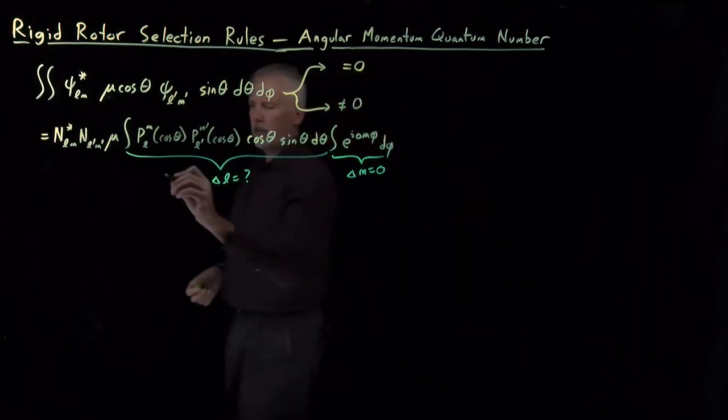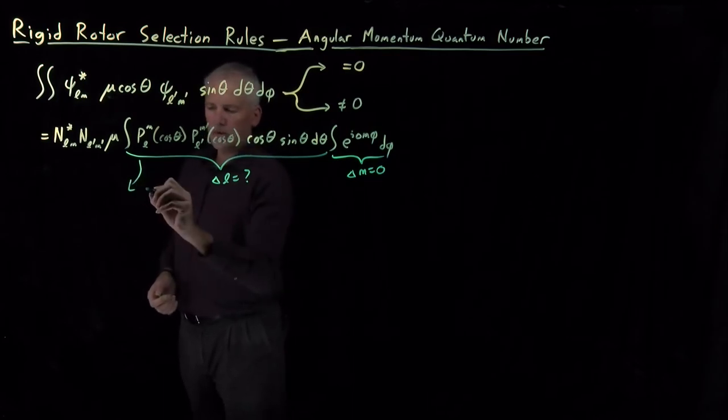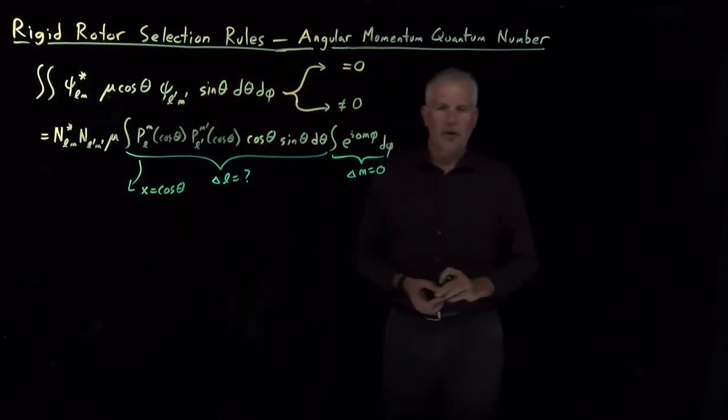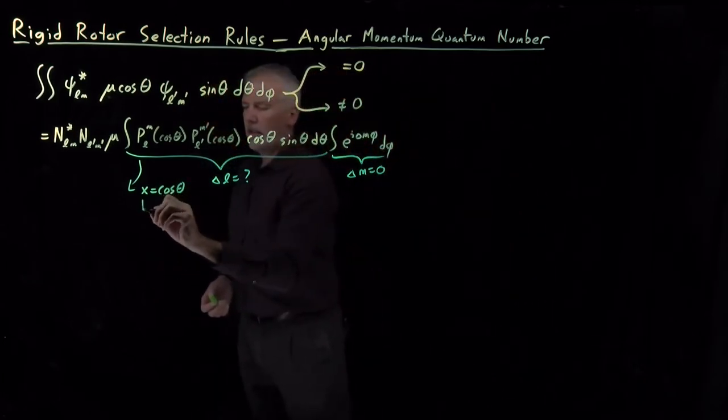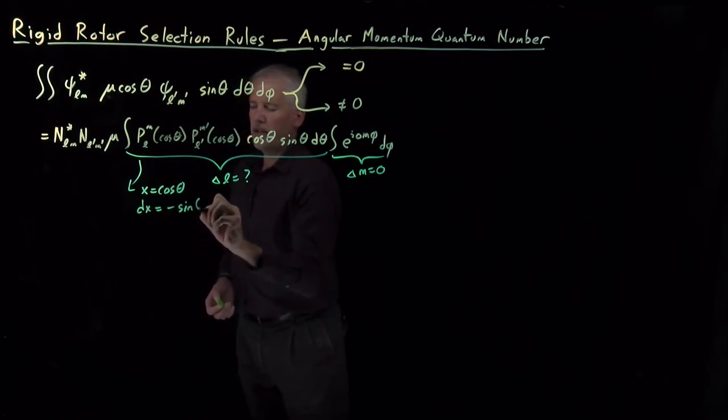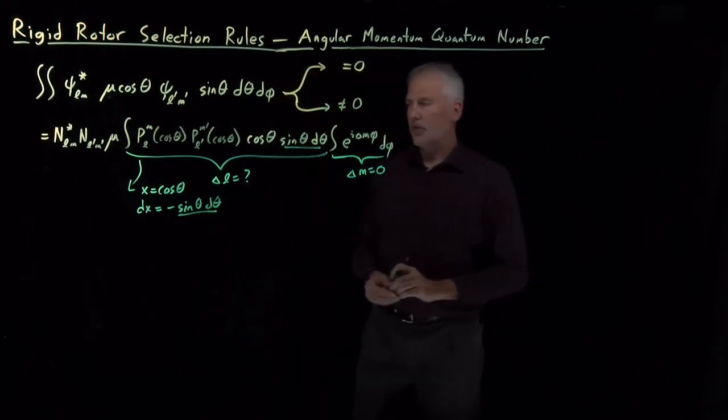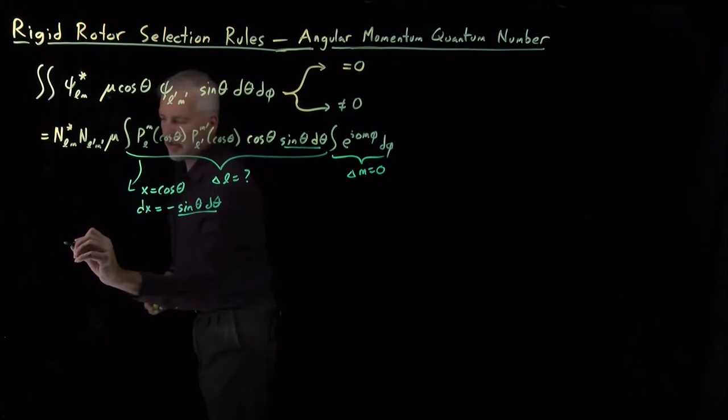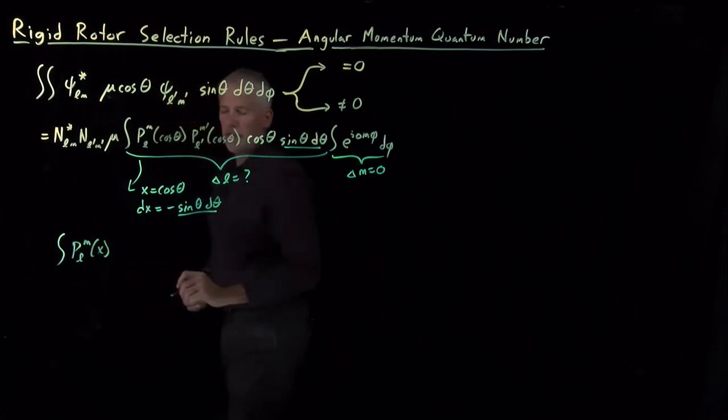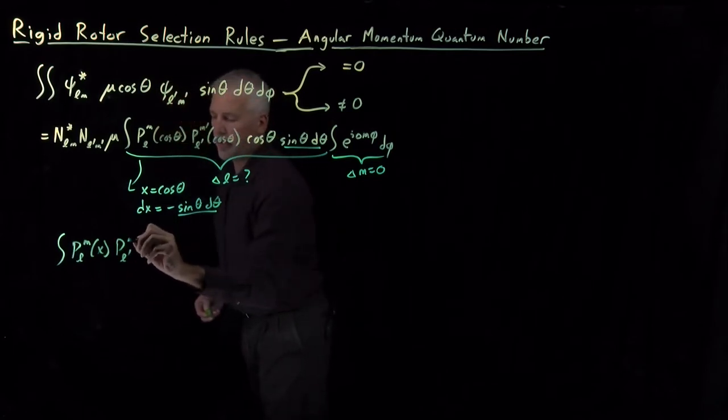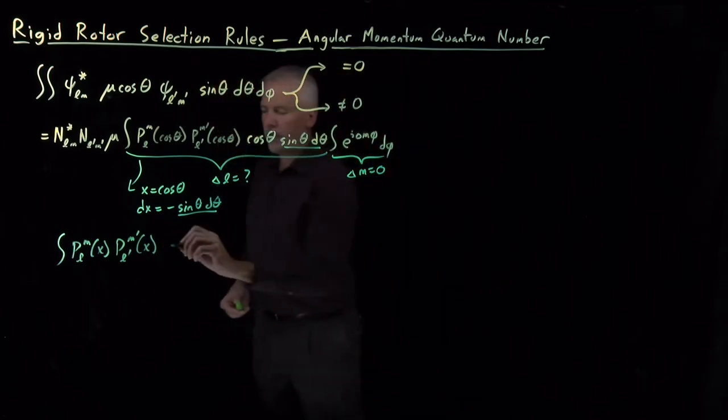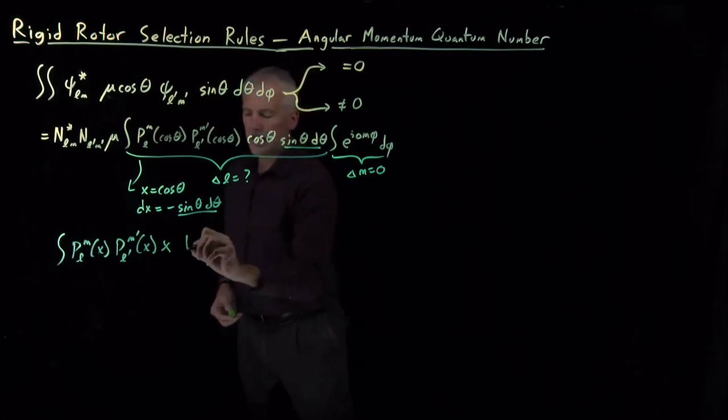If we simplify this a bit by using substitution, let x be shorthand for cosine theta. Then dx is going to be minus sine theta d theta. So the sine theta d theta already appears in this integral, so I can rewrite the whole integral in simpler form: integral of P_L^M as a function of x times P_L'^M', also as a function of x. This cosine theta I can now just write as x, and sine theta d theta I can write as dx.